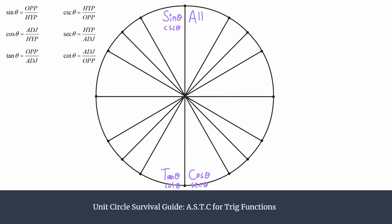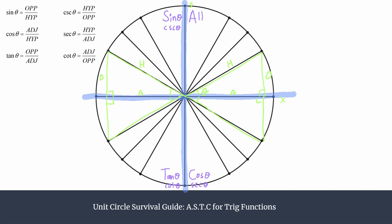Let's dig in and see why that's true. We have our axes — here's the y-axis, here's the x-axis — and our unit circle will be centered on the origin. Let's sketch in some sample triangles for each quadrant: one in quadrant one, quadrant two, quadrant three, and quadrant four. For each of these right triangles, we're looking at the central angle theta, and from there you can label the opposite, adjacent, and hypotenuse sides.